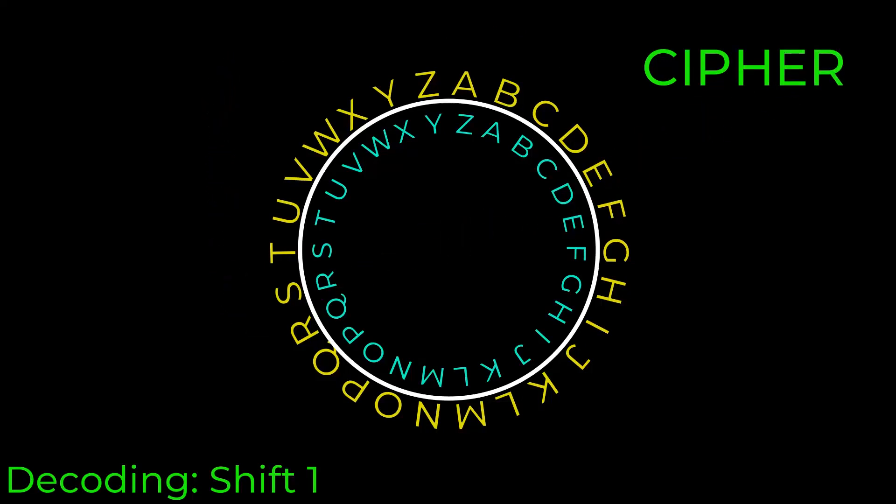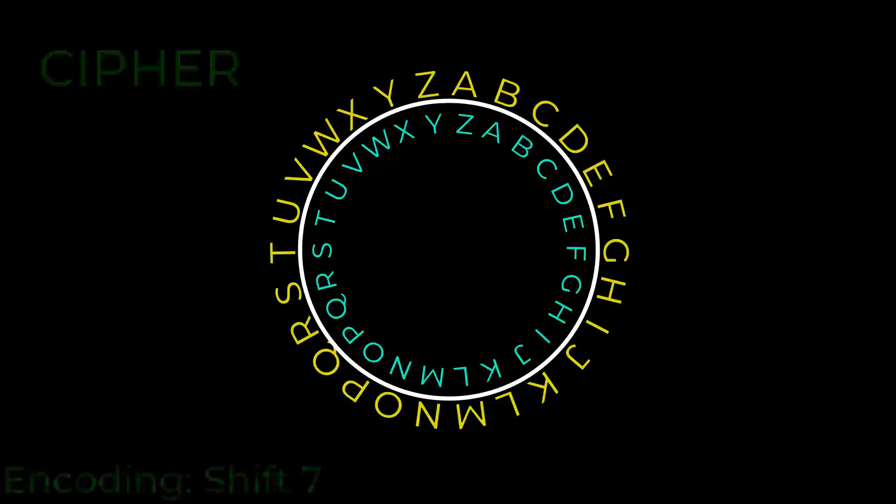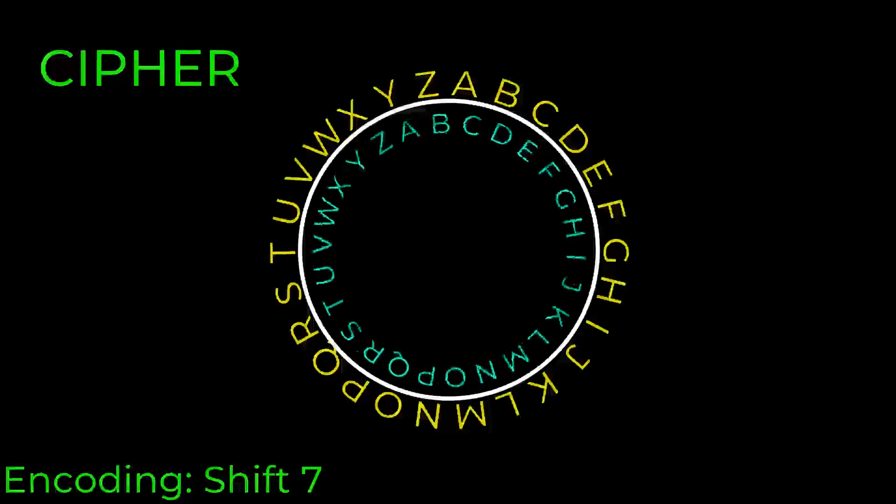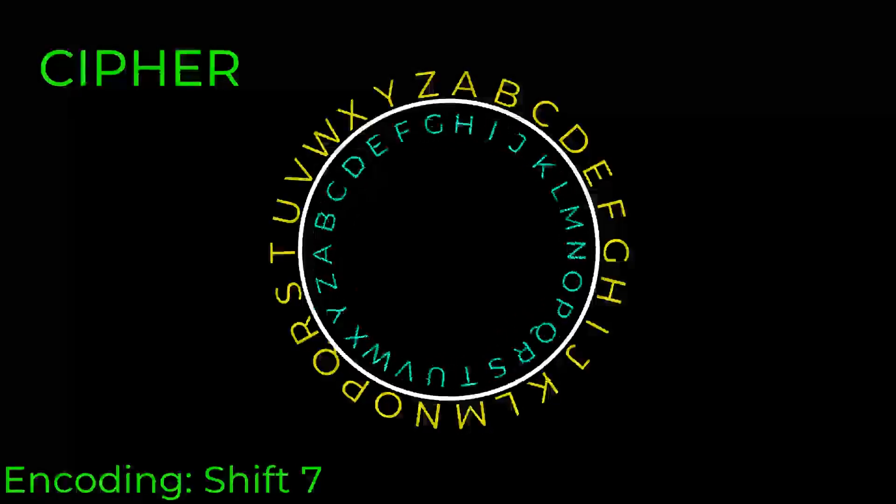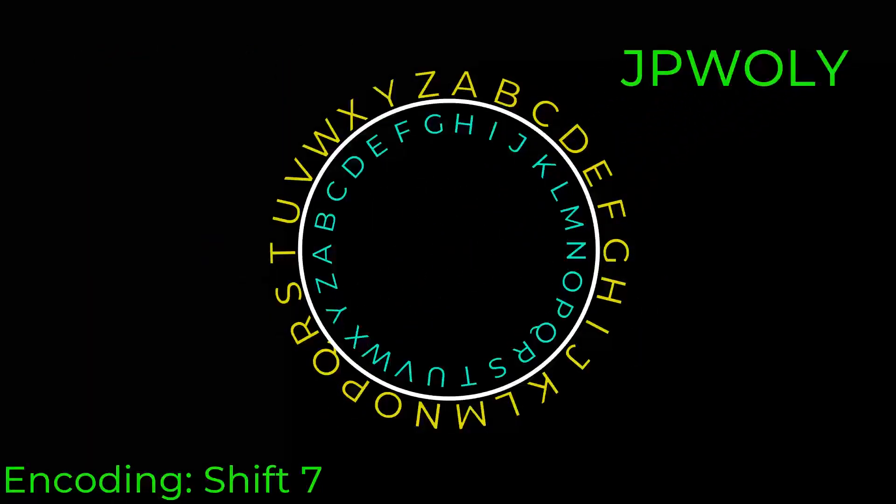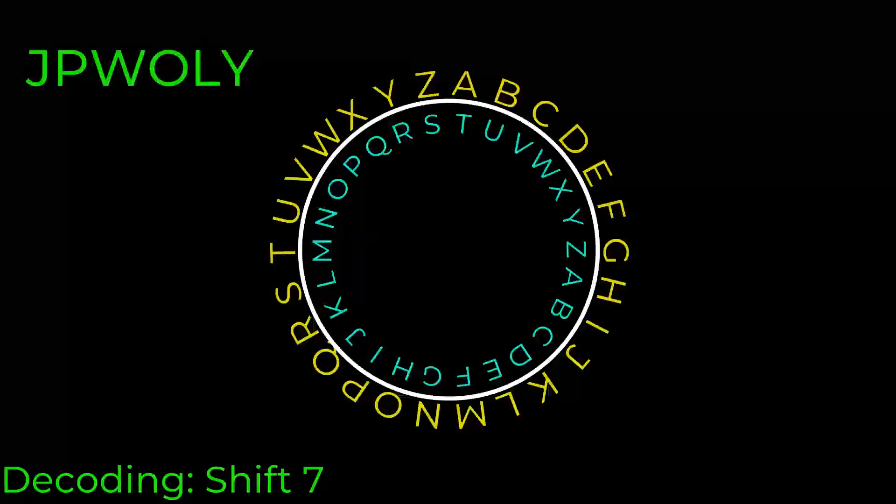Now this works for any shift number. Let's try a shift of seven this time, so we're really going to move our dial to the side. We're going to move it seven places. This time when we do it, we're going to do it faster, so I'm going to do all the letters at once. JPWOLY is our new text. Now if we do seven the other side, put JPWOLY into it, we get cipher back out. This is how a shift cipher works.